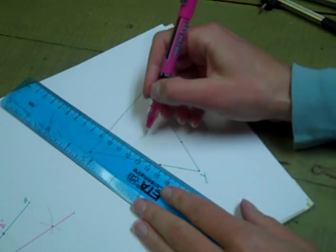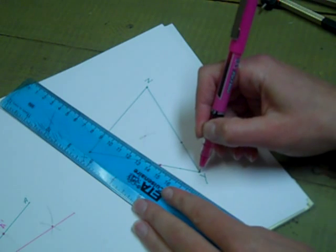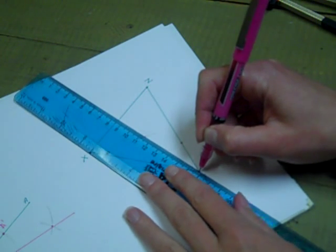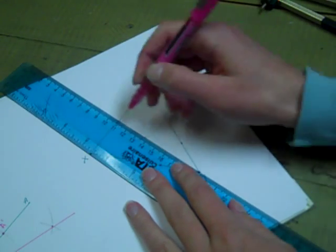So that intersection point, when I connect it to Y, should bisect angle Y.